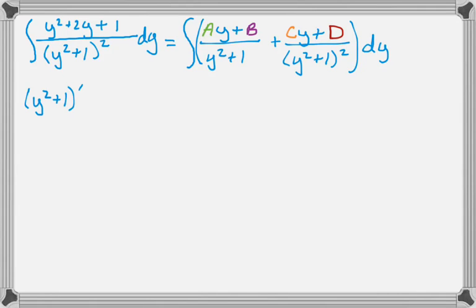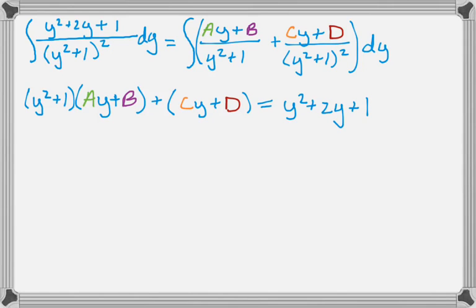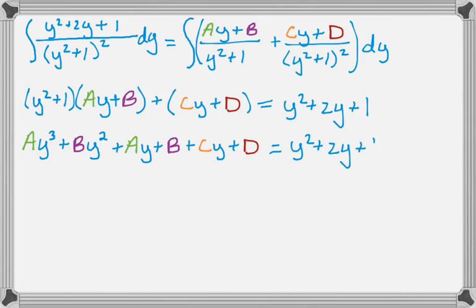So I'll clear the denominator to get y squared plus 1, the quantity Ay plus B, plus Cy plus D equals y squared plus 2y plus 1. I'm going to try something here that I haven't done in the other videos yet, and that is, I'm going to expand everything, and then try to equate coefficients, and sometimes that's a really quick way to do this, and in this case I think it's going to work out nicely.